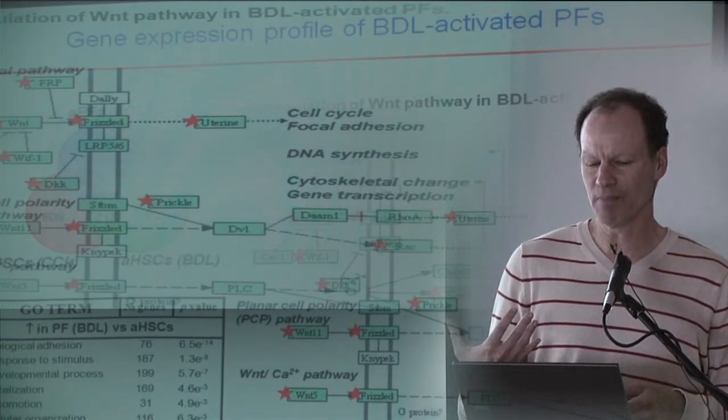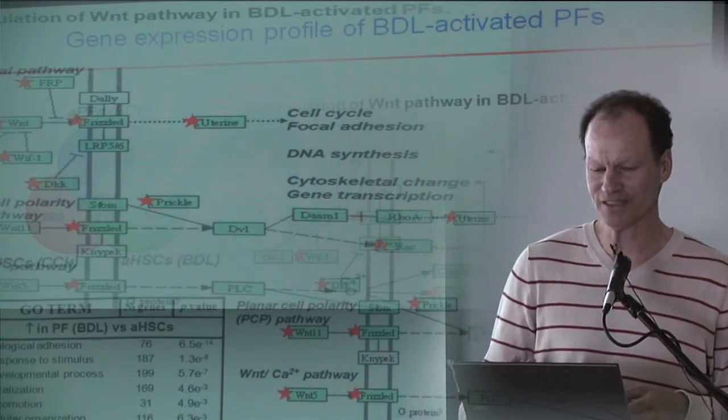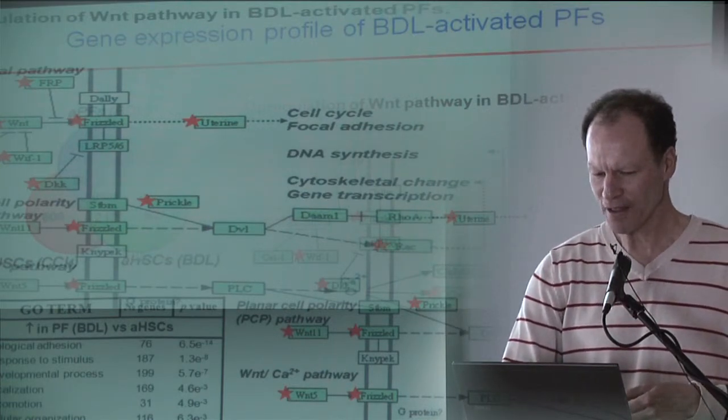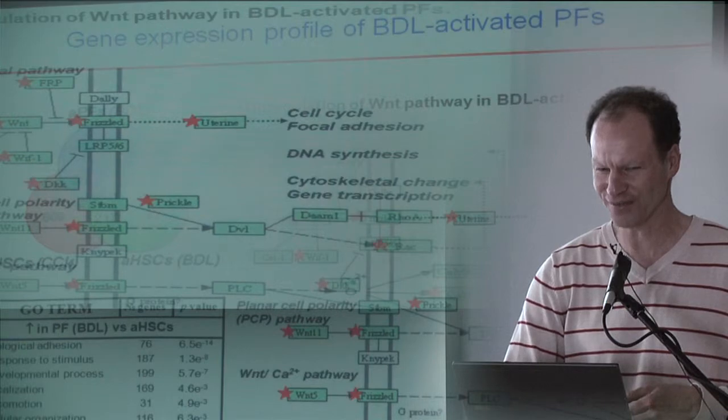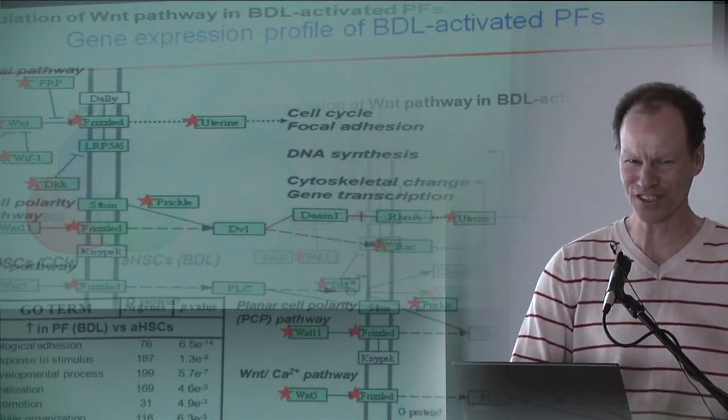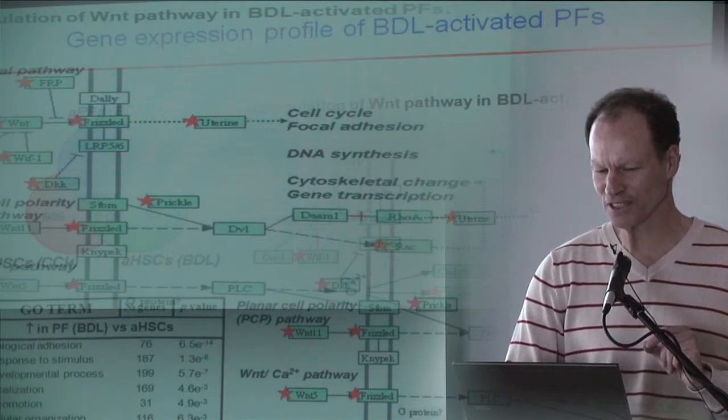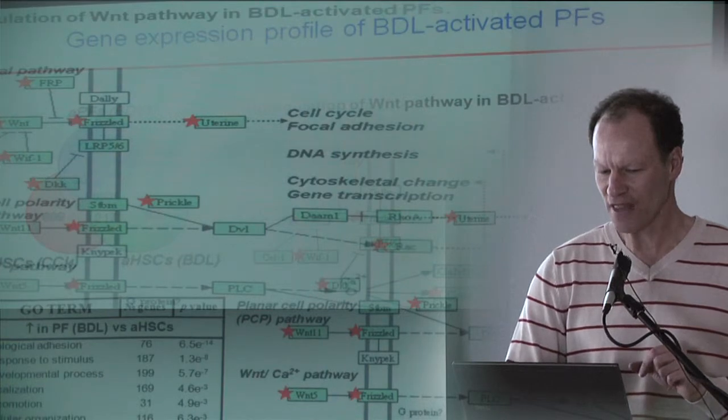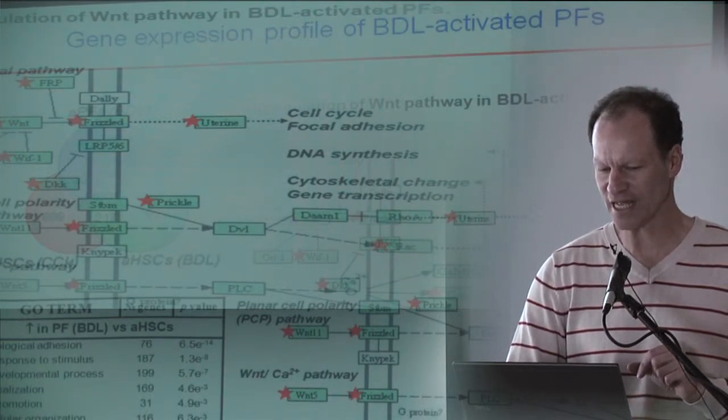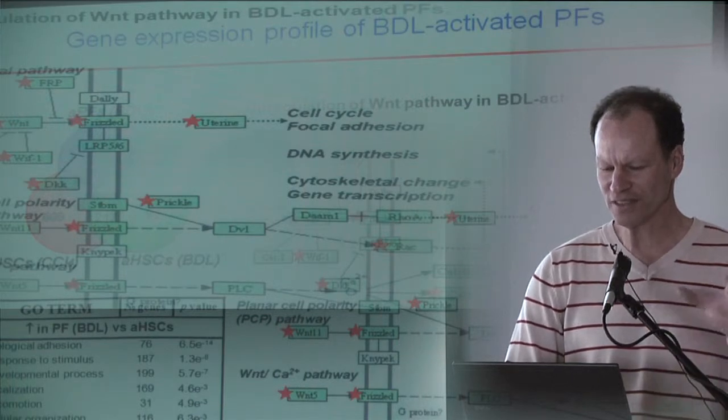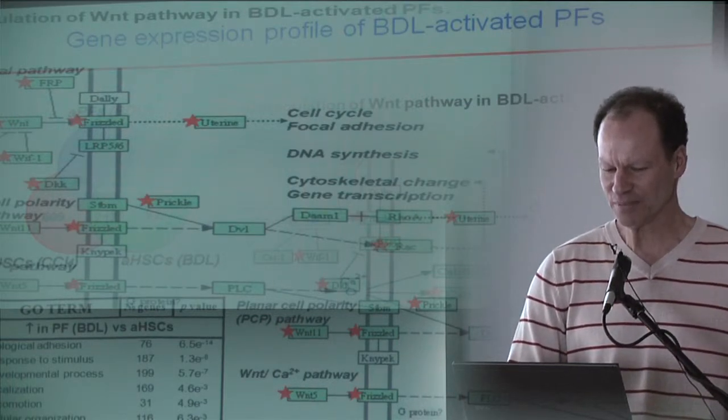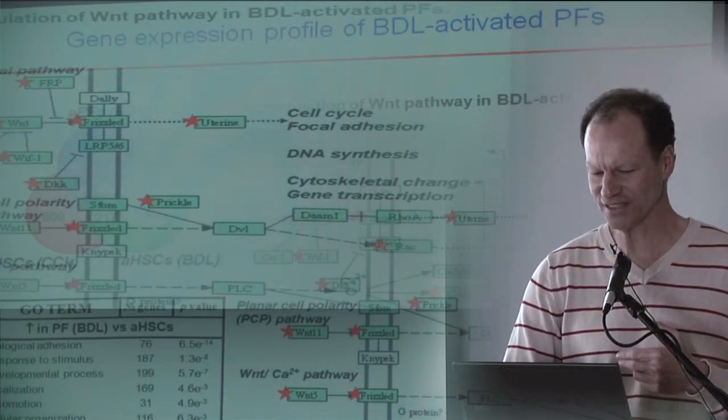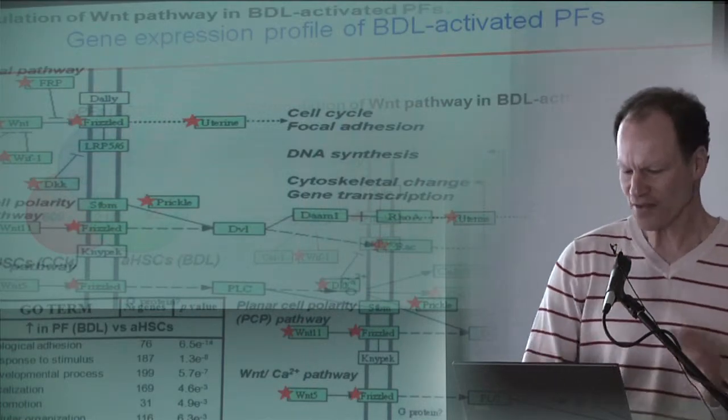We did microarray experiments on these different populations. All myofibroblasts share an enormous number of genes together, which makes sense. But if you look more closely, if you induce liver injury with bile duct ligation, there are a lot of genes in common between the activated stellate cells and the activated fibroblasts. The way you injure the organ seems to determine the myofibroblast gene expression.